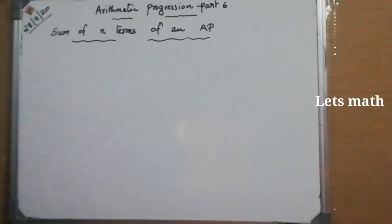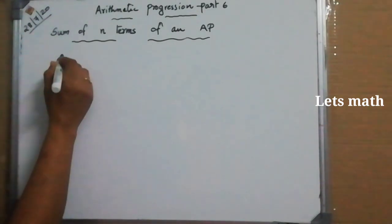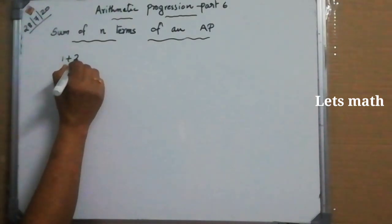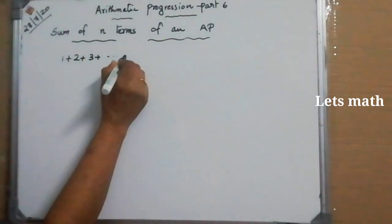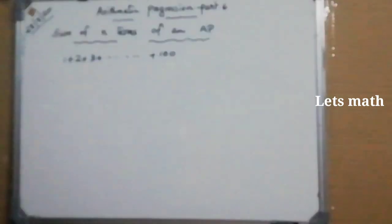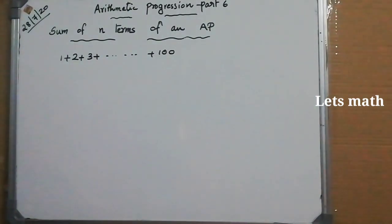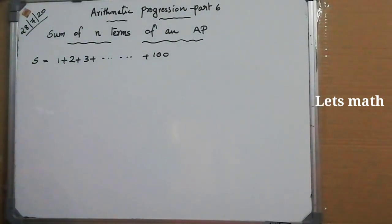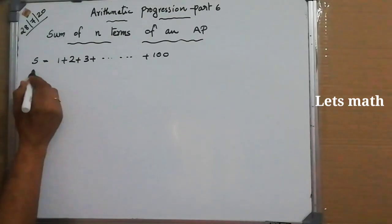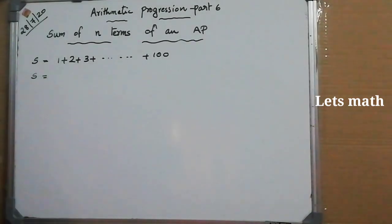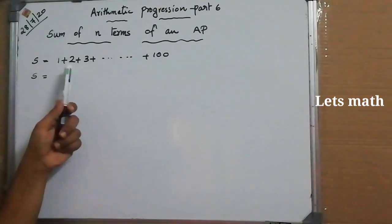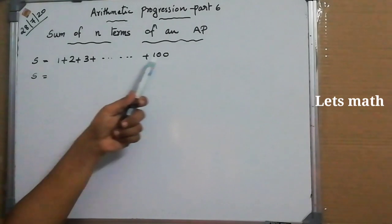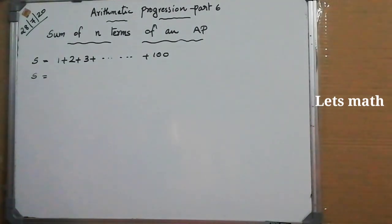Let us find the sum of the first 100 positive integers: 1 + 2 + 3 + ... + 100. We write S equal to 1 + 2 + 3 + ... + 100. Is it an Arithmetic Progression? Yes, since 1+1=2, 2+1=3, etc. These are all positive integers from 1 to 100.